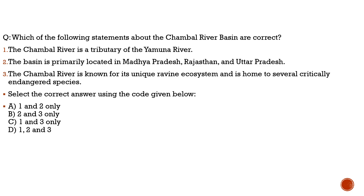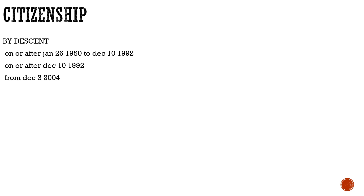Now moving to the static topic: Acquisition of Citizenship by Descent. A citizen is a political member of the country who enjoys all rights including the right to vote. For citizenship by descent, the rules have changed over time. For a person born outside India between January 26, 1950 and December 10, 1992: if the person's father was a citizen of India at the time of birth, the person is a citizen of India by descent. This was patriarchal in nature — only the father's citizenship determined the child's citizenship.